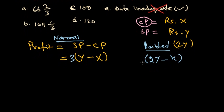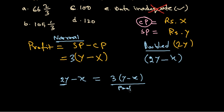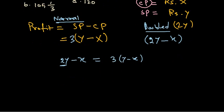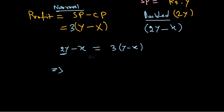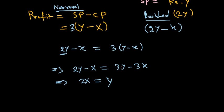We can write the equation: 2y minus x equals 3 times (y minus x), which expands to 3y minus 3x. Rearranging: 2y minus x = 3y minus 3x, so transferring terms gives 2x equals y. Therefore y equals 2x.